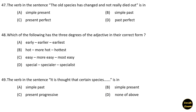Next question: The verb in the sentence 'The old species has changed and not really died out' is in — simple present, simple past, present perfect, or past perfect? Present perfect is the correct answer. Next question: Which of the following has the three degrees of the adjective in correct form? Option A is the correct answer: early, earlier, earliest.